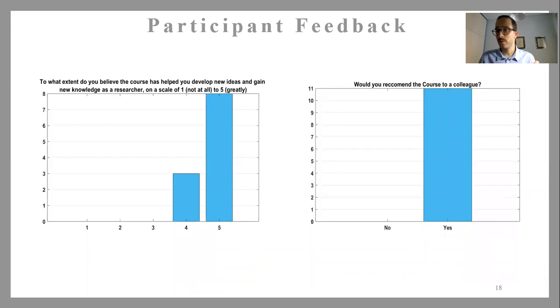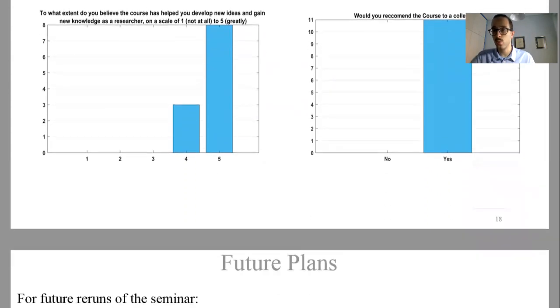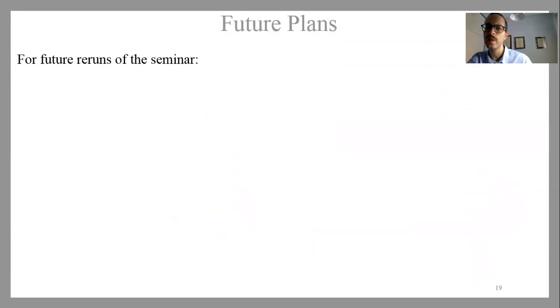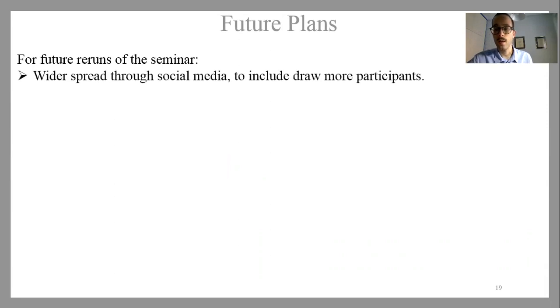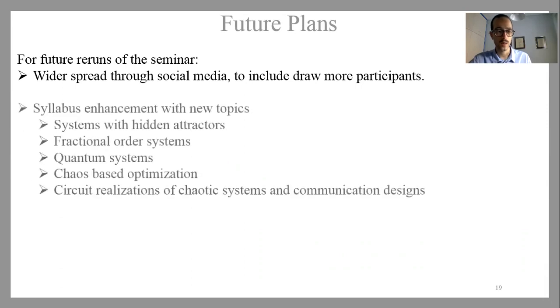So our end goal is to actually replicate the seminar and maybe do it as a yearly thing. But for this, we have set specific goals. So for example, we want to attract more people. So in future reruns, we will try to have a wider spread through social media to draw more people in the seminar. Secondarily, we were thinking of enhancing the syllabus with many different topics like hidden attractors, fractional order systems, maybe quantum systems, quantum chaotic systems, a very state-of-the-art topic, and maybe consider different applications like chaos-based optimization or possibly circuit implementations of these designs.